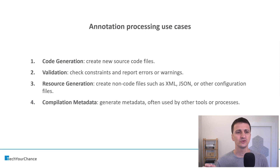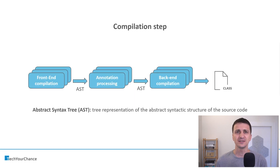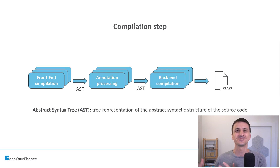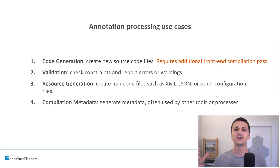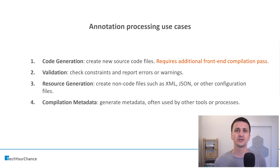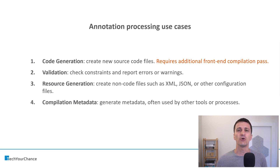One important distinction between code generation and resource generation is that code generation produces source code. Since annotation processors are executed after front-end compilation, the additional source code they generate must also be compiled by the front-end compiler. Therefore, code-generating annotation processors require an additional front-end compilation pass, and in some cases multiple passes. This explains why code-generating annotation processors like Dagger slow down your builds: they read the annotations, generate code, and then that code must be compiled again by the front-end, adding significant overhead to your build process.